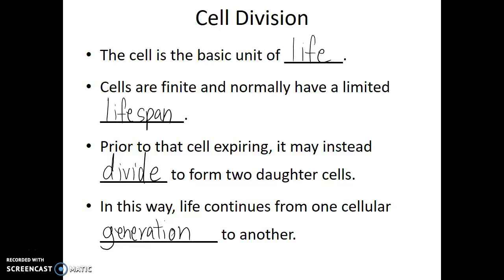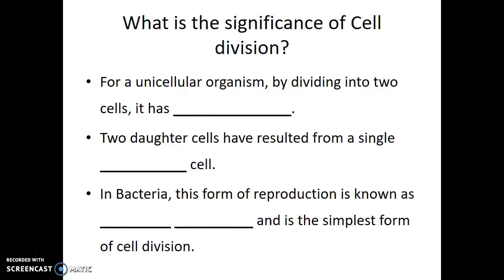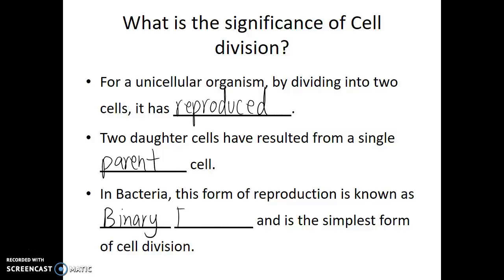What's the significance of cell division? Well, it all depends on the type of organism that we're dealing with. For a unicellular organism, by dividing into two cells, it has reproduced. We went from one organism to two organisms. This is how offspring are formed — two daughter cells have resulted from a single parent cell. In bacteria, this form of reproduction is known as binary fission.